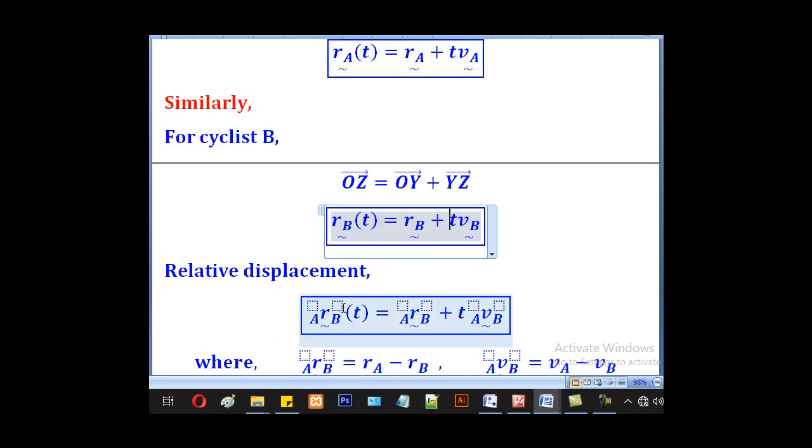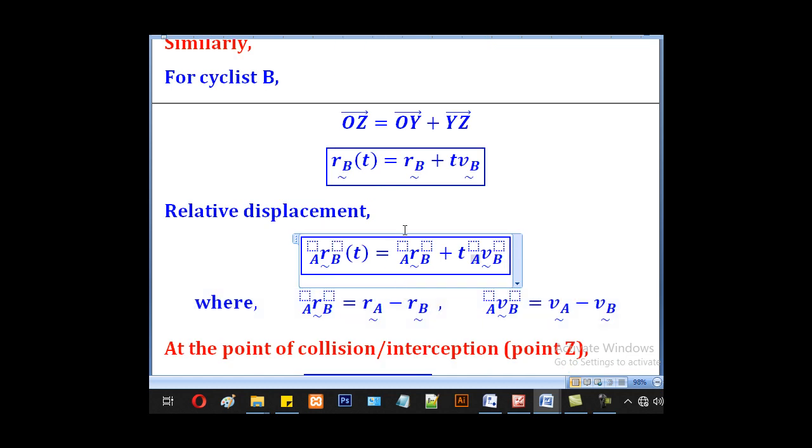Therefore, the relative displacement of A to B will be given by initial relative displacement plus the time taken times the relative velocity of A to B. We are getting this formula in comparison with this formula. Where there is RAB, we have put RAB, and where there is VB, we have put VAB.